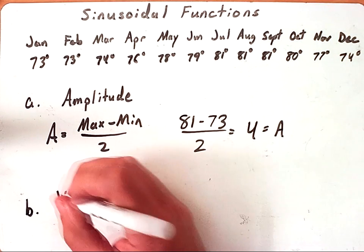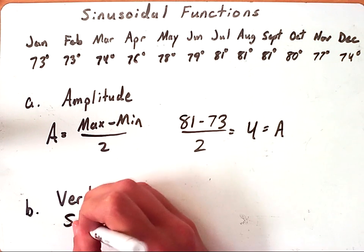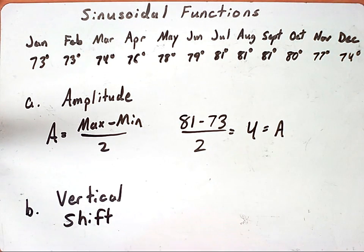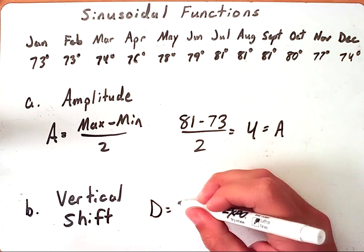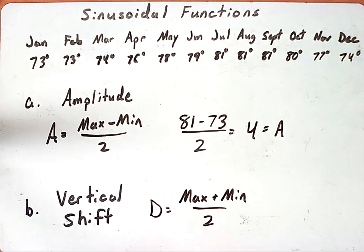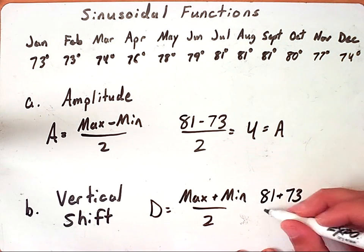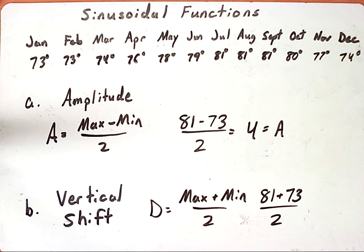For the second part we want to know what the vertical shift is. It's a very similar formula - we actually use max and min and this time we just add them together and divide by 2 to get our vertical shift. So again I'm going to use 81 and now I'll add 73 to that and then divide by 2. If you take 81 and add 73 to it you get 154, and if you divide that by 2 you get a total of 77 for your vertical shift, which is D.